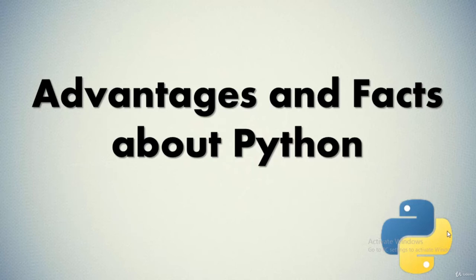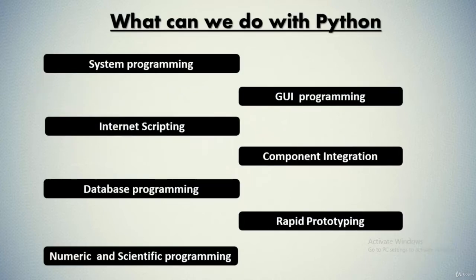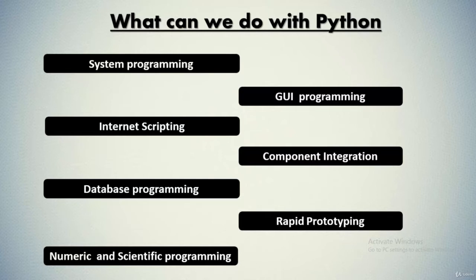We've already had a quick introduction about Python. Now let's understand some advantages and facts. Python is a well-designed programming language useful for accomplishing real-world tasks — the sort of tasks developers do day in and day out. It's commonly used in a variety of domains as a tool for scripting other components and implementing standalone programs. As a general-purpose language, Python's roles are virtually unlimited — from website development and gaming to robotics and spacecraft control.